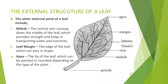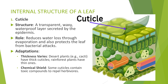Now let's dive inside the leaf to explore its internal structure. 1. The cuticle: the cuticle is a transparent, waxy layer that reduces water loss and protects the leaf from bacterial attacks. Its thickness varies depending on the plant's environment — desert plants like cacti have thick cuticles while rainforest plants have thin ones. Some cuticles contain toxic compounds to repel herbivores.